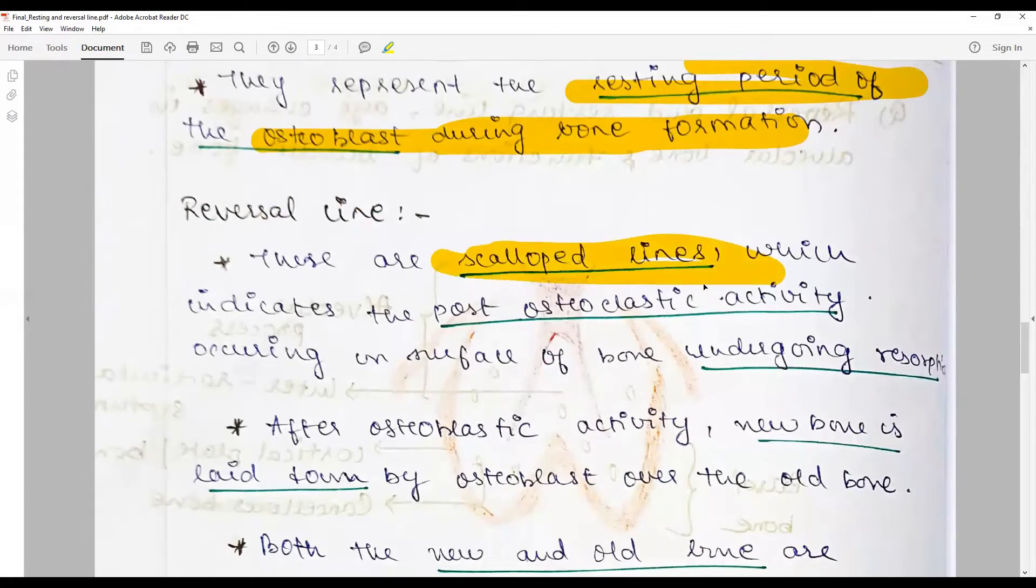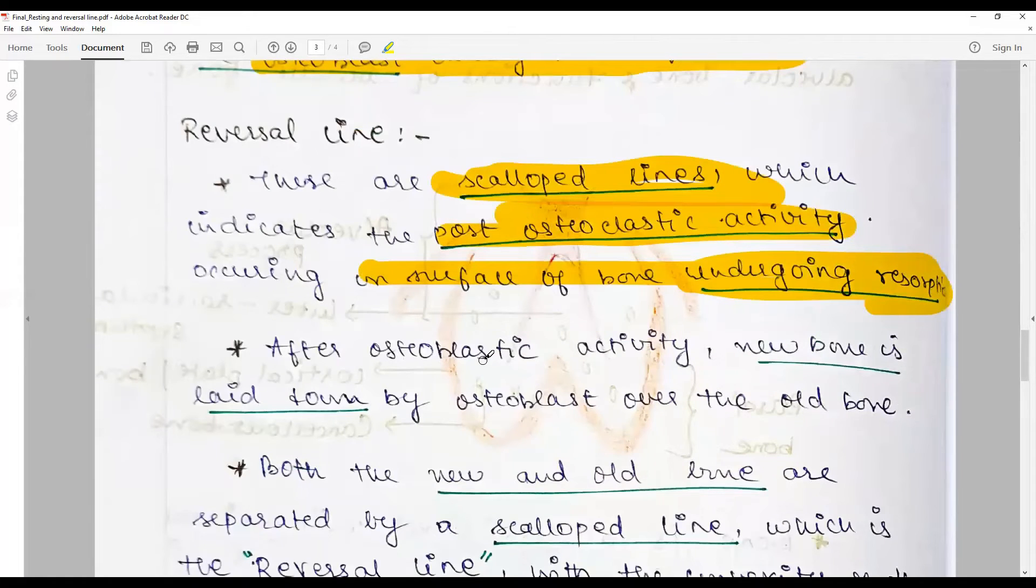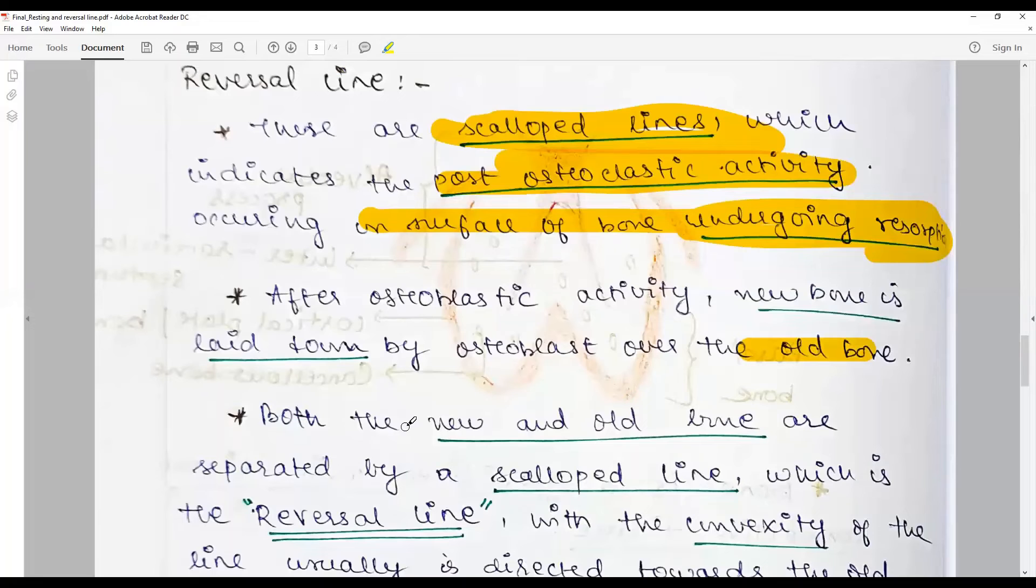Reversal lines are scalloped lines, they are not regular lines, which indicates post osteoclastic activity occurring on the surface of bone undergoing physiological or pathological resorption. After osteoclastic activity, new bone is laid down by osteoblasts over the old bone. Both the new and old bone are separated by a scalloped